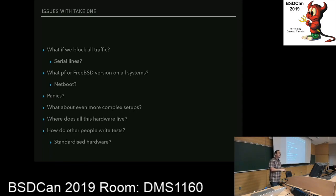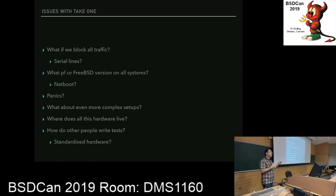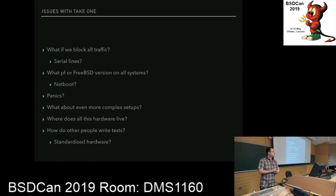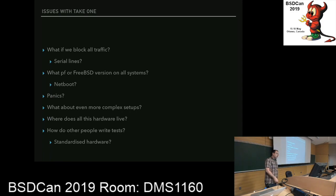What happens if the machine panics? You need control code to understand that a machine panicked, collect information, and give it a hard reset — and you need more hardware to do this. You can't really expect all developers to have a setup requiring five machines, serial interfaces, and power switches. So how do other people write tests when they can't test their tests? There are advantages — Alexander did a great talk about it, and you can do meaningful performance testing — but it's a complicated setup that needs care and feeding.